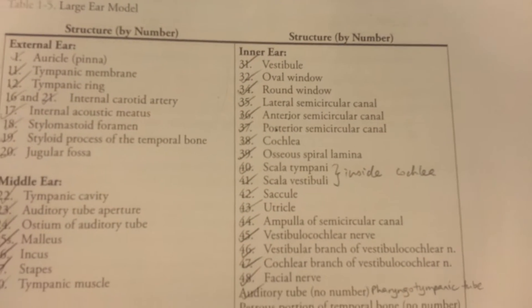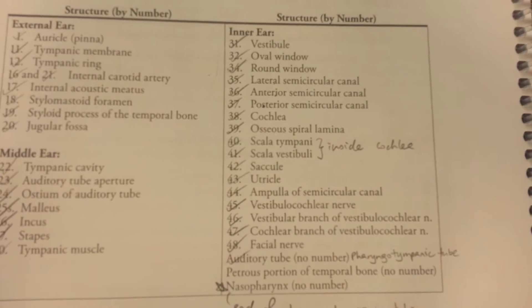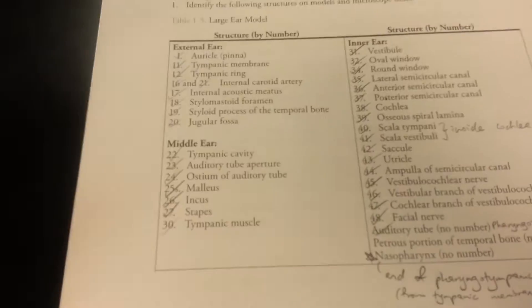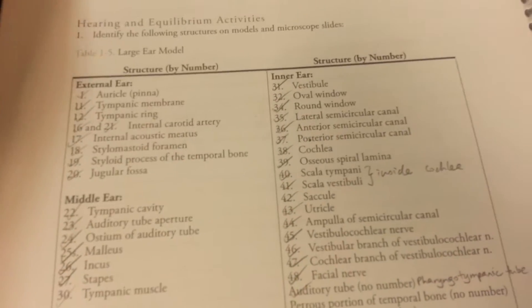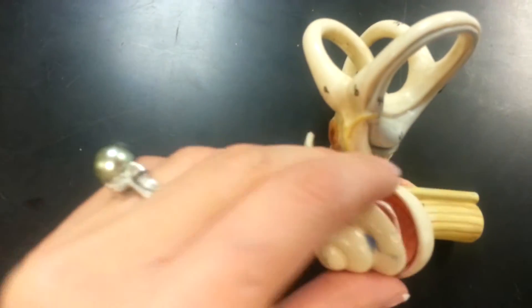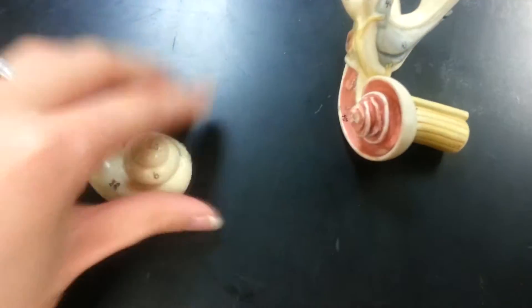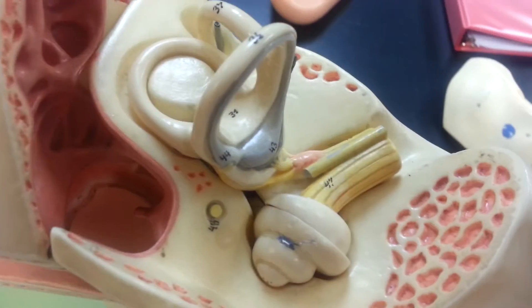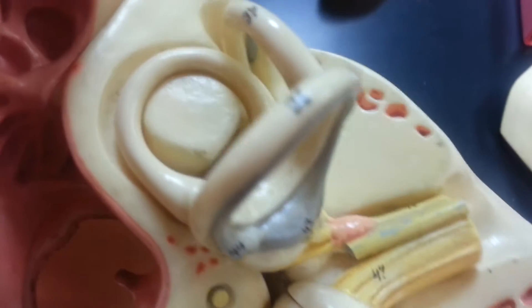Second video for the large ear model and we're doing the inner ear to finish it off. So we're going to look at this guy. Cochlear is not staying on, so cochlear without cochlear. Looking at it in situ.